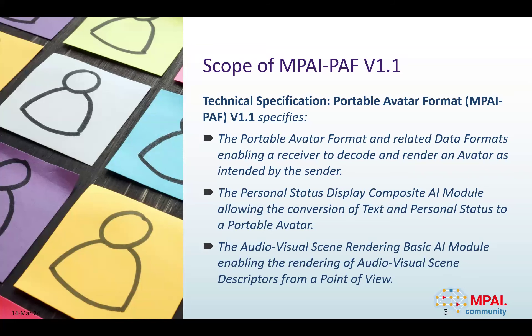This technical specification includes several key functionalities. First of all, it ensures that avatars can be correctly decoded and interpreted, so that they can be correctly rendered at the receiver side in the same way that the sender intended them to be represented. It also includes a composite AI model designed to translate text and speech of a portable avatar according to the preferences of the receiver, in order to enhance the communication between them. A second relevant feature is the management of the personal status of the avatar — a collection of information that tries to add depth to the character's digital persona, like the indication of mood and intent of the avatar.